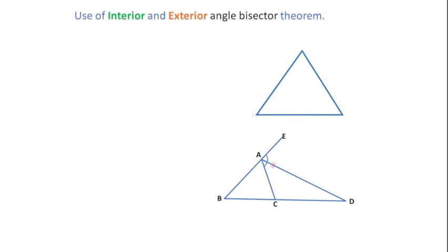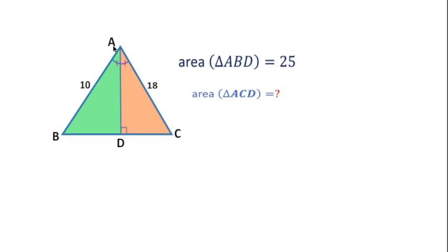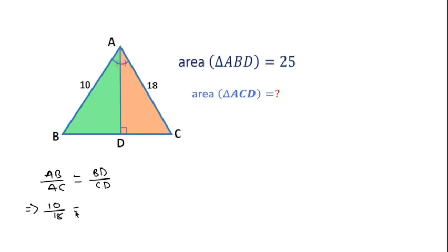Now I will solve a few problems. In this problem the length of AB is 10 and the length of AC is 18, and the area of the green triangle ABD is 25. We need to find the area of the orange triangle ACD. By using the angle bisector theorem: AB over AC equals BD over CD, putting in values 10 over 18, which simplifies to a ratio of 5 to 9 for BD to CD.